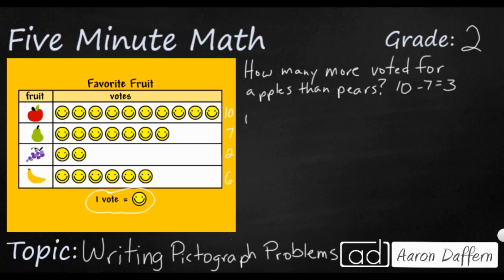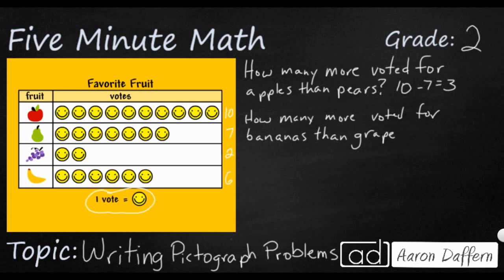We could do another how many more problem. This time: how many more voted for bananas? When we choose bananas, the next number has only one option, because the first number you choose has to be bigger than the second. Bananas has six, but it's only larger than one other option — grapes. So we just need to make sure the first number is always bigger than the second, since these are subtraction problems. Six minus two equals four.